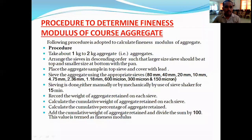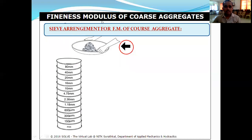Next, sieve the aggregate using the appropriate sieve sizes: 80 mm, 40 mm, 20 mm, 10 mm, 4.75 mm, 2.36 mm, 1.18 mm, 600 micron, 300 micron, and 150 micron. These are the sieve sizes required for the fineness modulus of coarse aggregate.